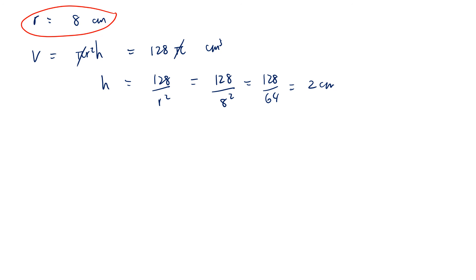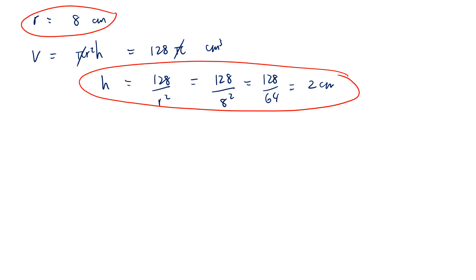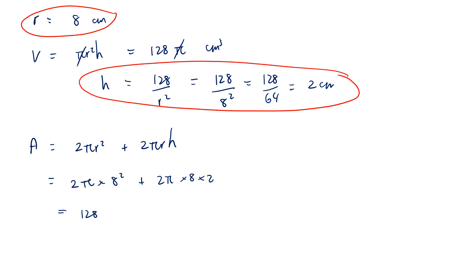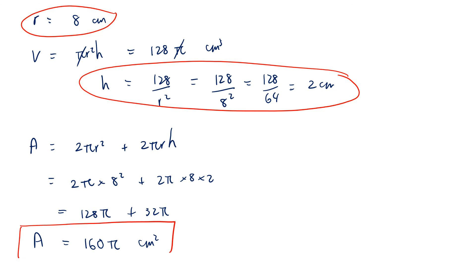Now we calculate the surface area using the optimal dimensions. A = 2πr² + 2πrh. Substituting r = 8 and h = 2: A = 2π(8²) + 2π(8)(2) = 128π + 32π = 160π cm². So the minimum amount of aluminium needed to produce one can is 160π centimetres squared.